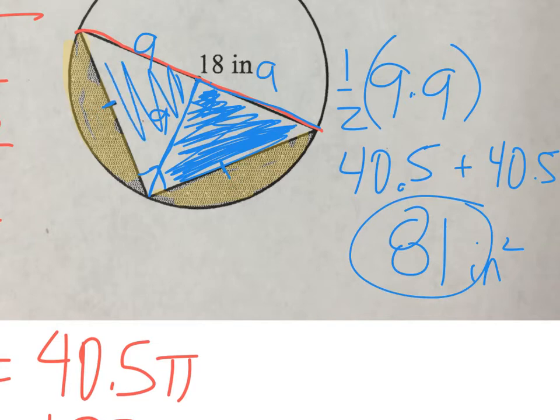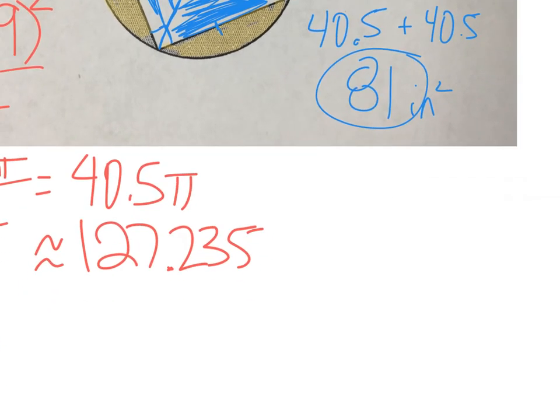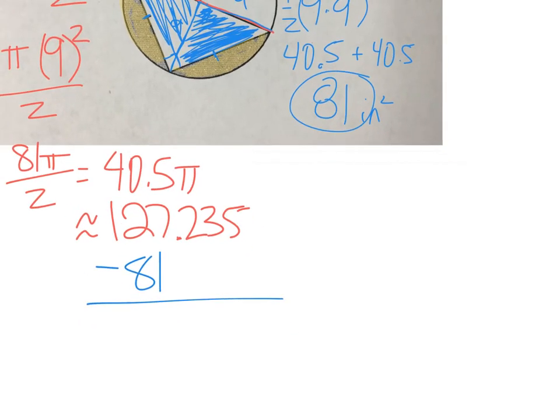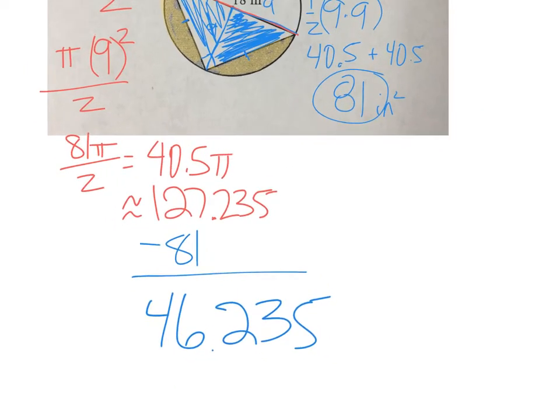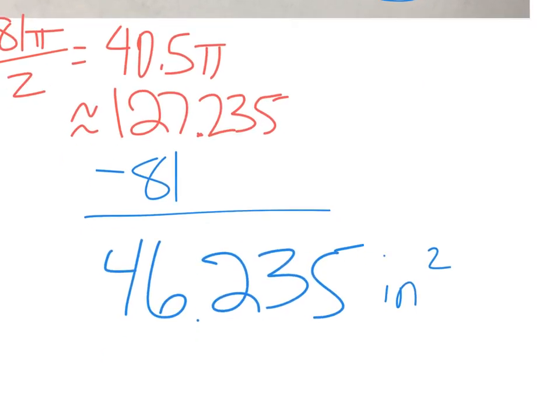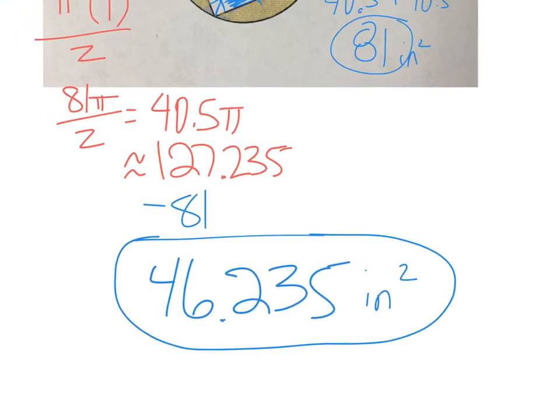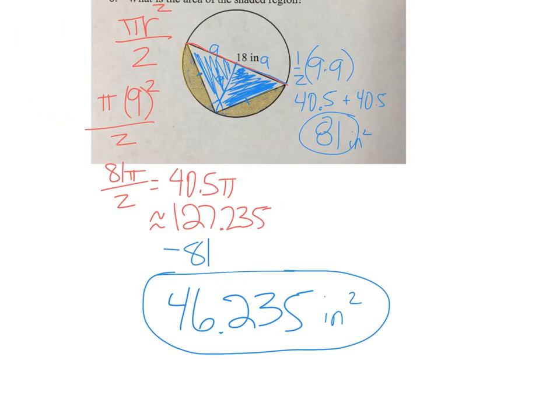If I subtract my triangle from my semicircle, I can figure out what the area of the shaded region is, and that comes out to be 46.235 square inches. So you find the area of your circle first, and then however you can find the area of your triangle, do that, and then subtract them.